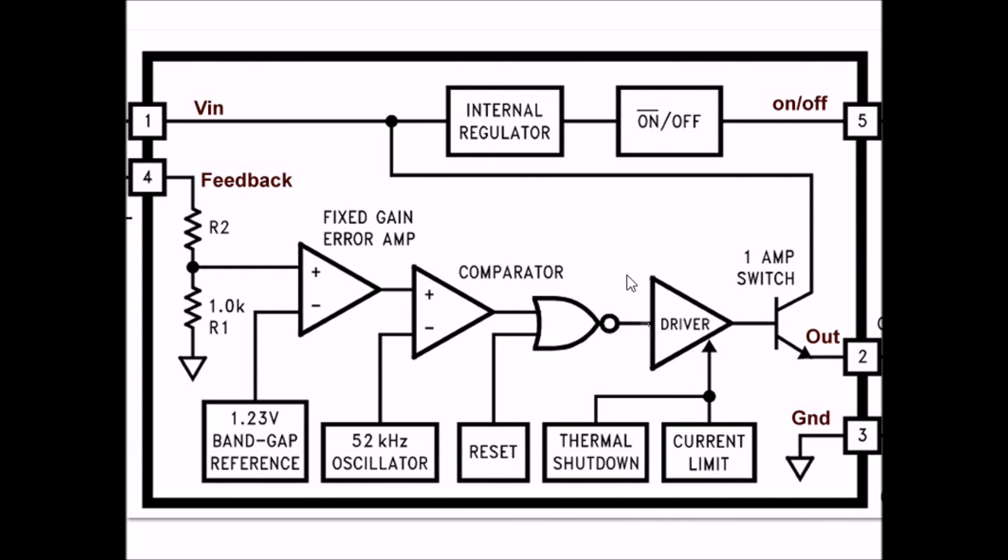This illustrates the internal block diagram of the LM2575 series of switching voltage regulators. Pin 1, as we mentioned before, is VIN. It goes right over to this 1-amp switching transistor, which produces your output pulse-width modulation pulse. It has an internal regulator. This is the circuit that controls the on and off. If it's tied to ground, it will turn on. If it's high, it will turn off.